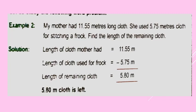So 5.80 meter is the length of the remaining cloth. The question asks: find the length of the remaining cloth. So the answer is: the length of the remaining cloth is 5.80 meter, or you can simply write 5.80 meter cloth is left.